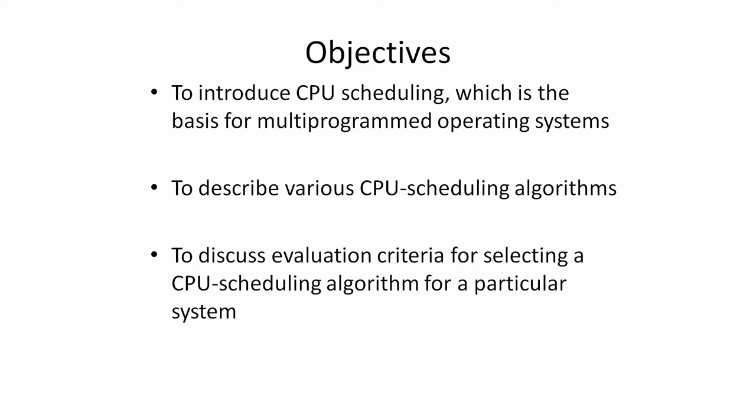The basic concept is that the CPU Scheduler is the one which decides which process goes to the CPU and gets its job done. Because we always have n number of processes waiting, and those n number of processes are waiting in the ready queue. We know that a process goes through different states — new, executing, waiting, and ready — and the CPU Scheduler works in the ready queue.